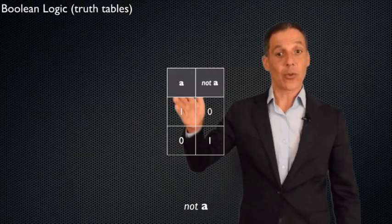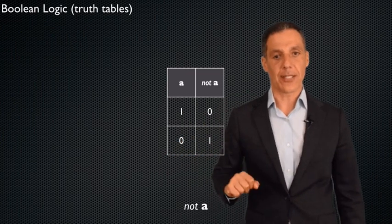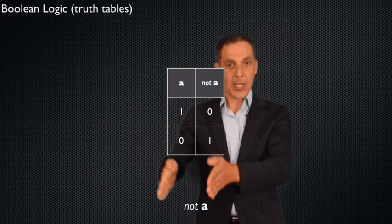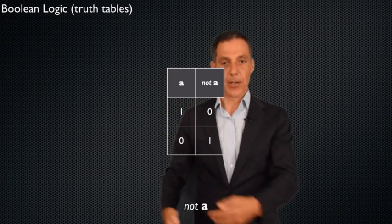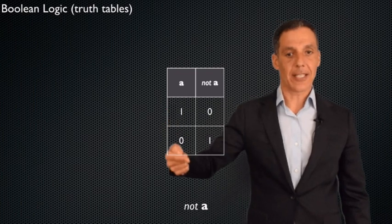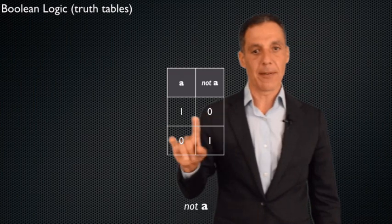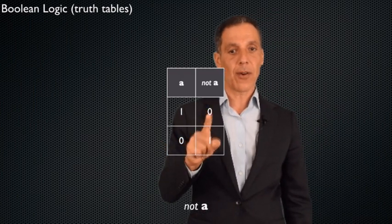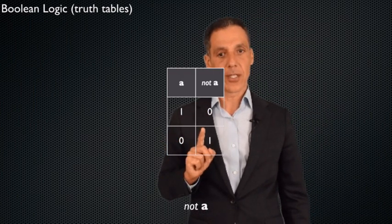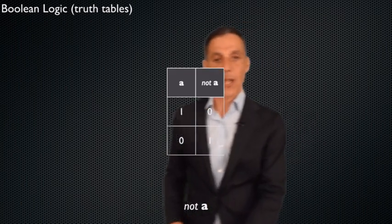Now, logical NOT has only one input, the NOT of something. You don't NOT two things. So now I only have two columns, my input and my output, and I only have two rows, which are the values that A can take on, which is zero or one, true or false. The NOT is sort of like complementing a bit. The NOT of true is false. The NOT of false is true. So those are the three logical operators.